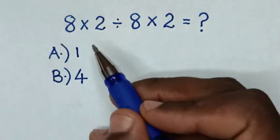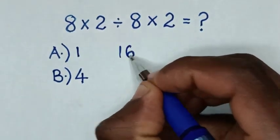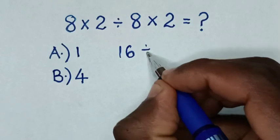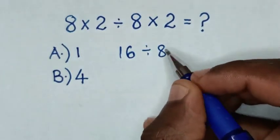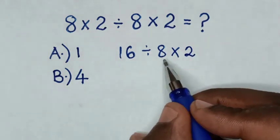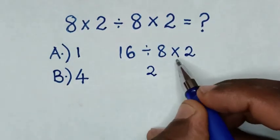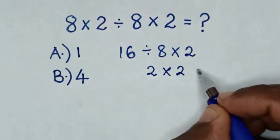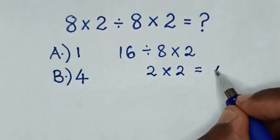So, 8 times 2 is 16, then divided by 8, then times 2. Then in the next step, 16 divided by 8 is 2, then times 2. So it will be equal to 2 times 2 is 4.